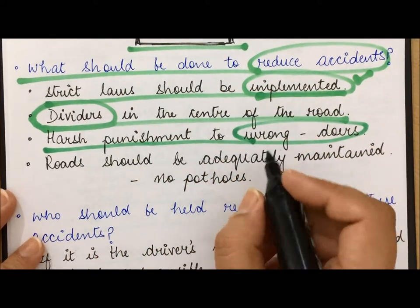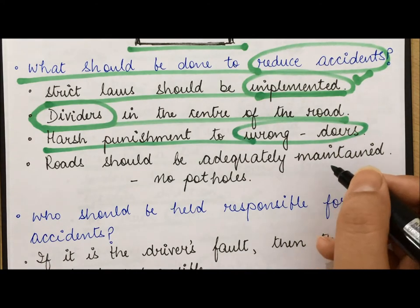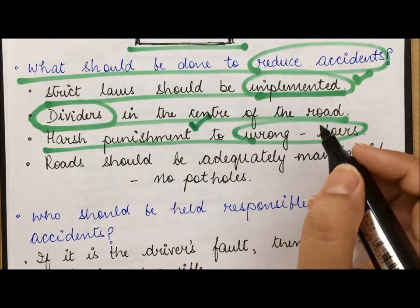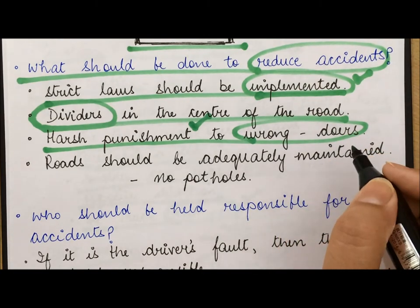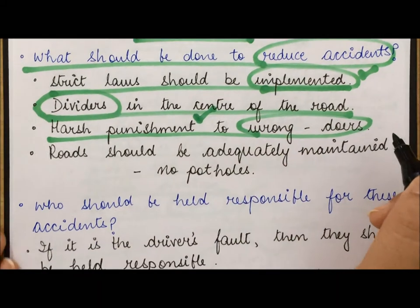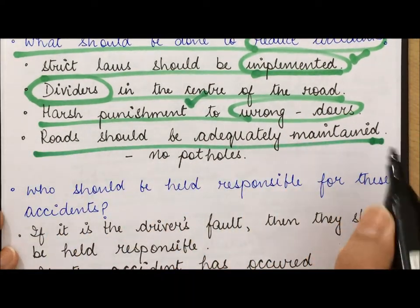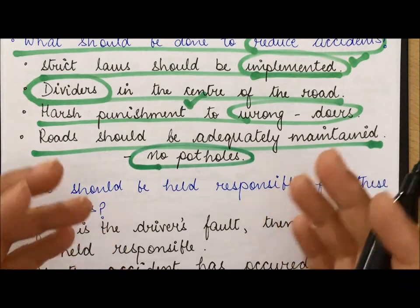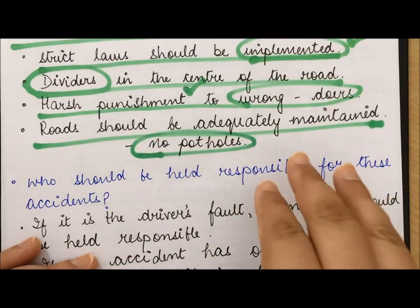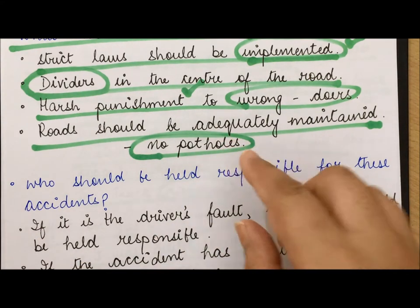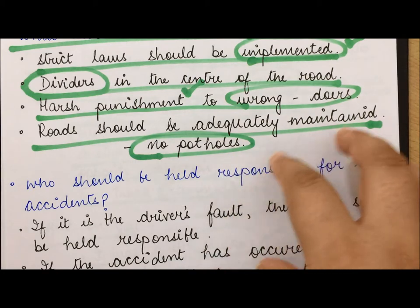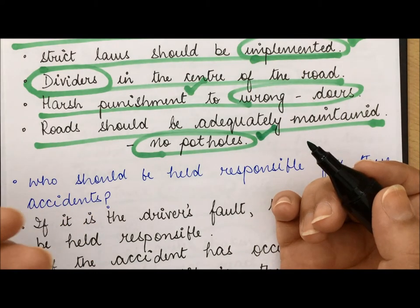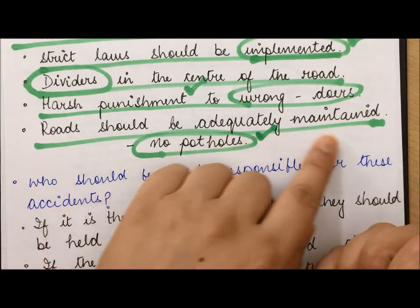Additionally, harsh punishment should be given to wrongdoers — for example, people who talk on the phone while driving, drive drunk, or behave recklessly. This would discourage dangerous behavior. Also, roads should be adequately maintained. Potholes — where the road surface is broken — can cause accidents, especially for bike riders who may lose their balance. So there should be no potholes and roads must be kept in good condition.